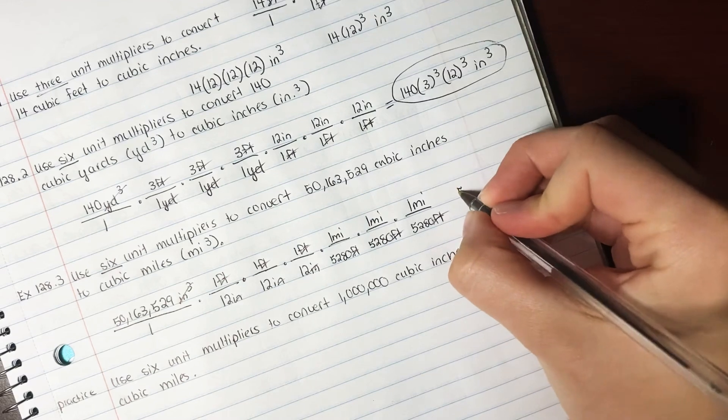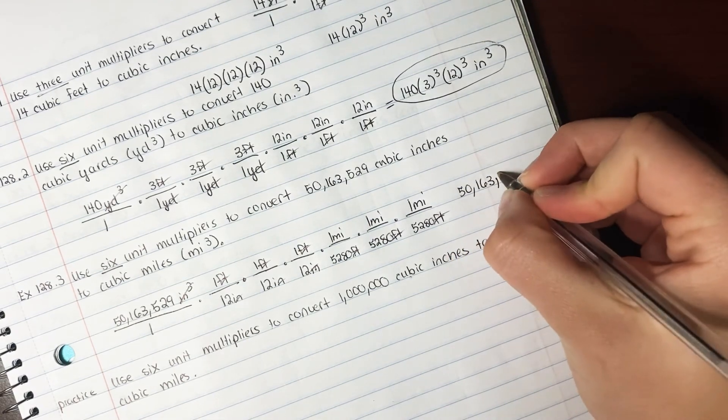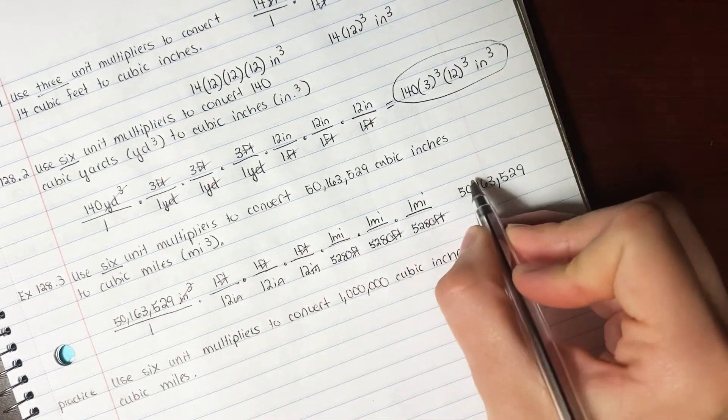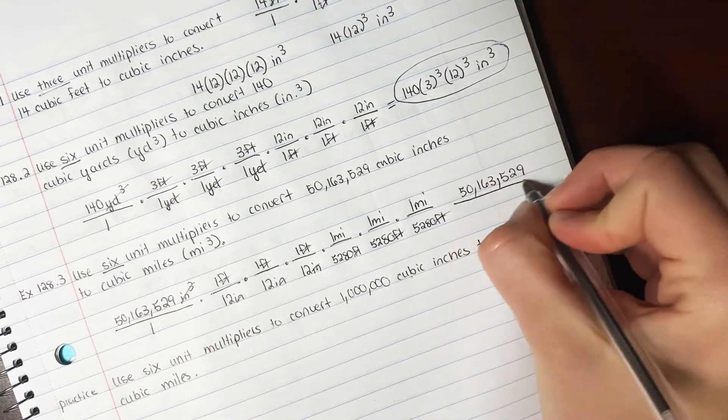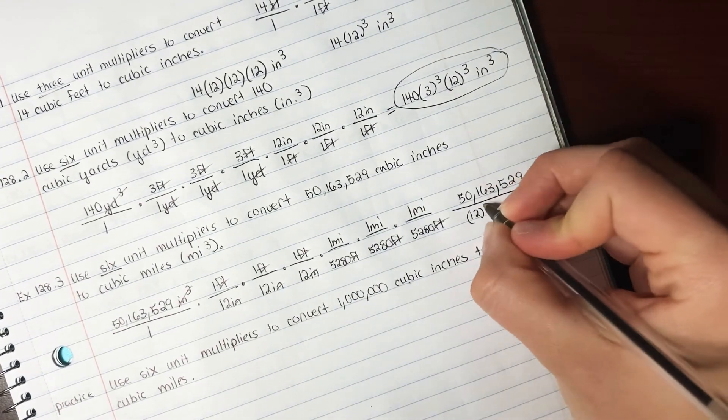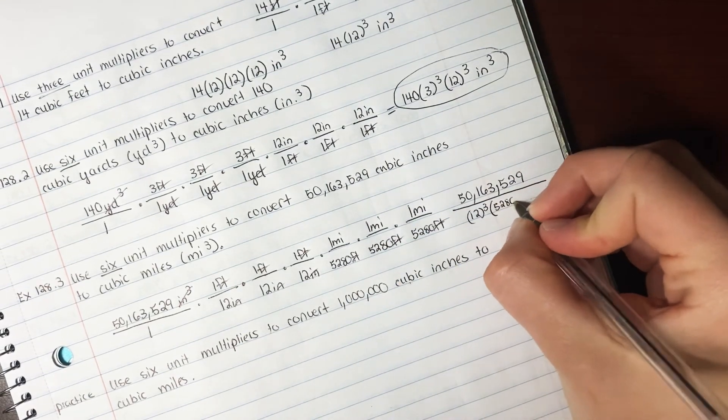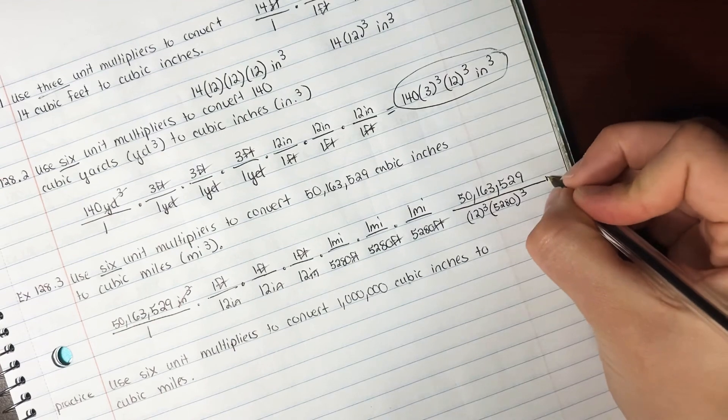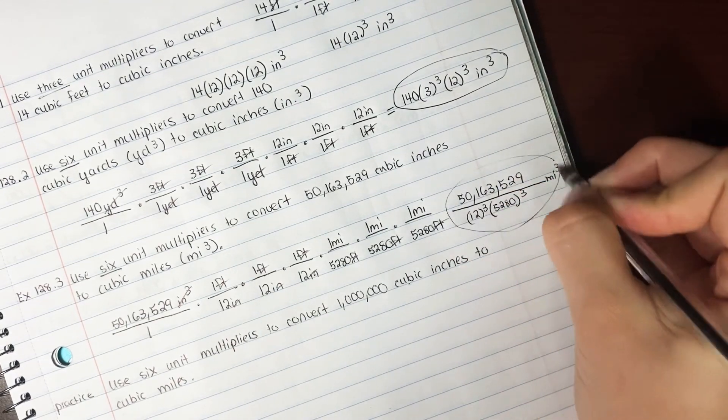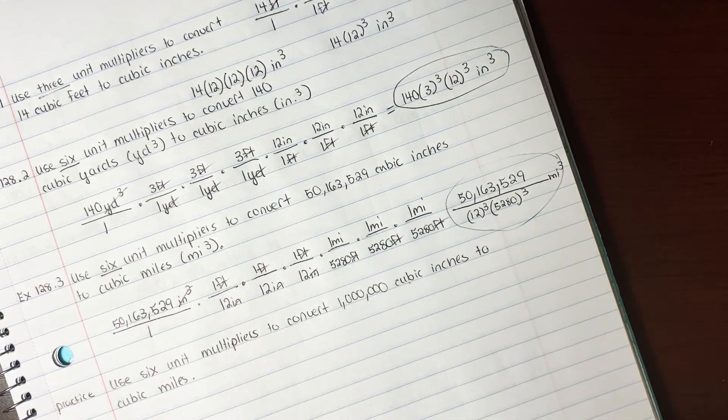So our answer is going to be 50,163,529. And we're multiplying that all by ones on the top, so it's just going to be this. Then on the bottom, we have 12 cubed times 5,280 cubed, and that's going to be miles cubed. So make sure you're keeping the top part on the top and the bottom part on the bottom. That would be your answer.